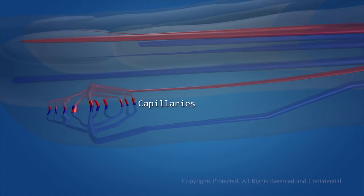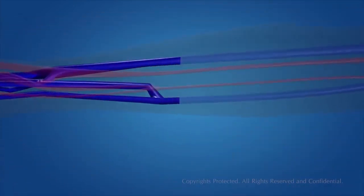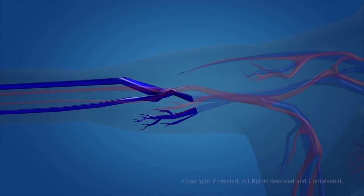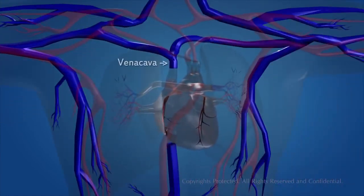The blood then becomes deoxygenated, and the blood capillaries get mixed and form thicker blood vessels called veins. The veins carry deoxygenated blood to the heart. The blood vessels that carry deoxygenated blood to the heart are known as the vena cava.